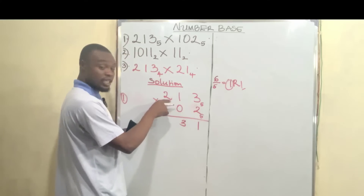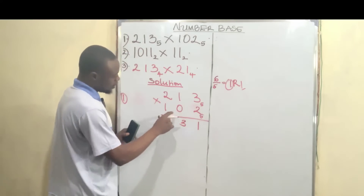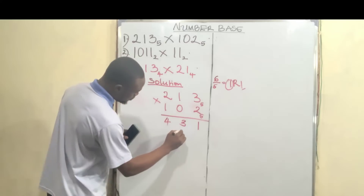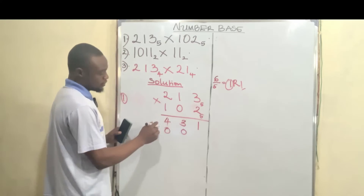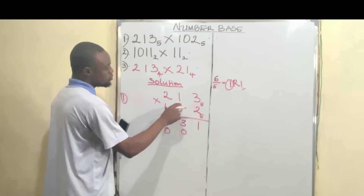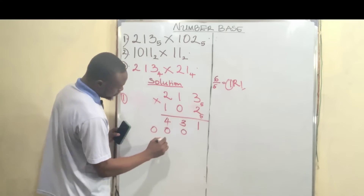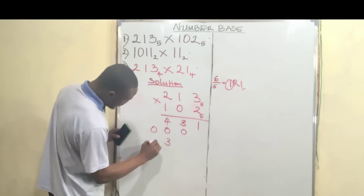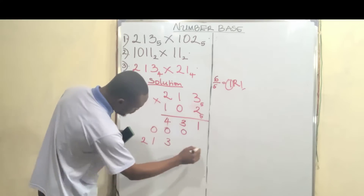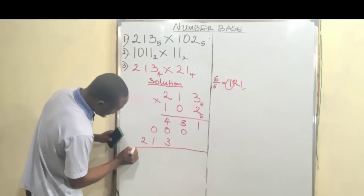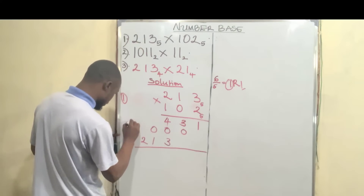2 multiplied by 2 is 4, so we have 4 here. Now 0 multiplied by everything is 0, so we have 0, 0, and 0 for that row because there are three digits. Then 1 multiplied by 3 is 3, 1 multiplied by 1 is 1, and 1 multiplied by 2 is 2. Now rule a line and put a plus, because we are adding.